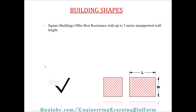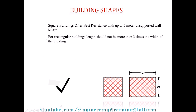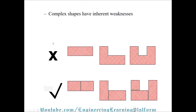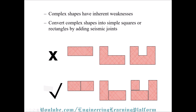Regarding building shapes: square buildings offer the best resistance, with up to five meters of unsupported wall length. For rectangular buildings, the length should not be more than three times the width. Complex shapes inherit weakness; convert complex shapes into simple square or rectangle by adding a seismic joint. We have discussed in the E-TAPS course how to provide a seismic joint or expansion joint.